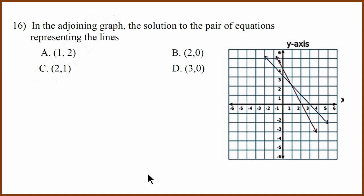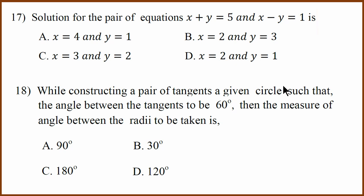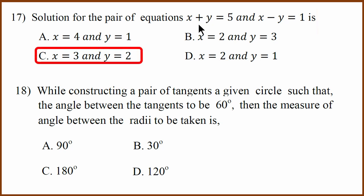Sixteenth question is a coordinate geometry question. They have asked what is the point where x-axis is 1 and y-axis is 2. The answer is A. Seventeenth question: I recommend you try all the answer options since the values are easy. In this case C works — 3 plus 2 is 5 and 3 minus 2 is 1.